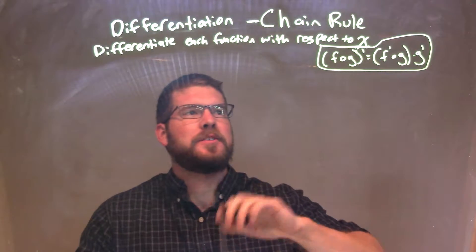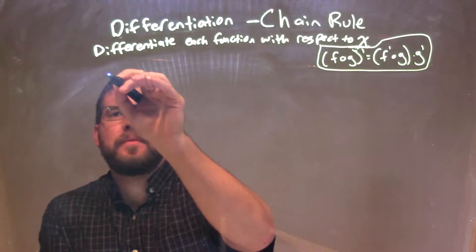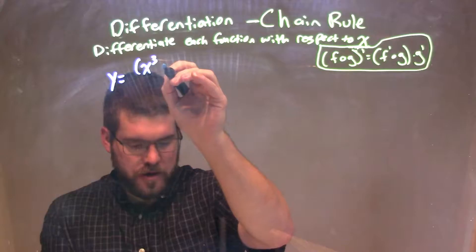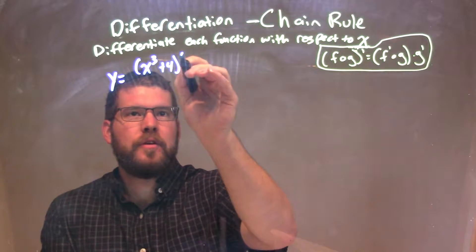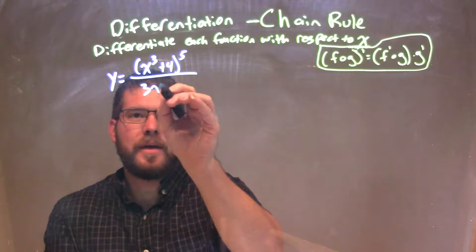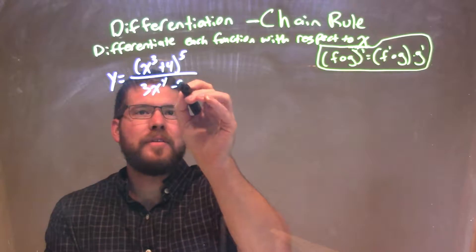We're going to differentiate each function with respect to x. So if I was given this function, y equals x to the third plus four in parentheses to the fifth power, all over 3x to the fourth minus 2.